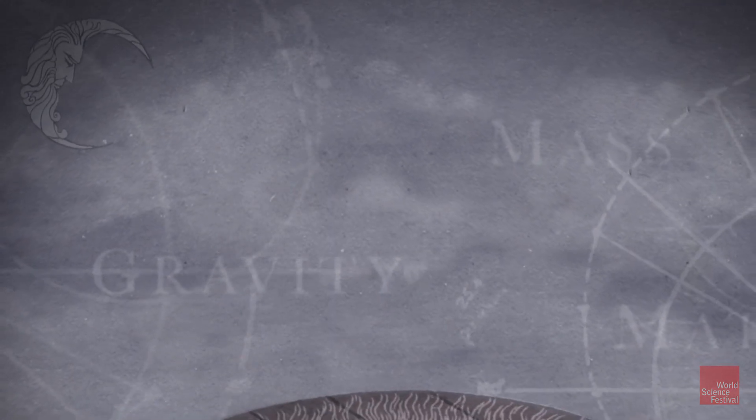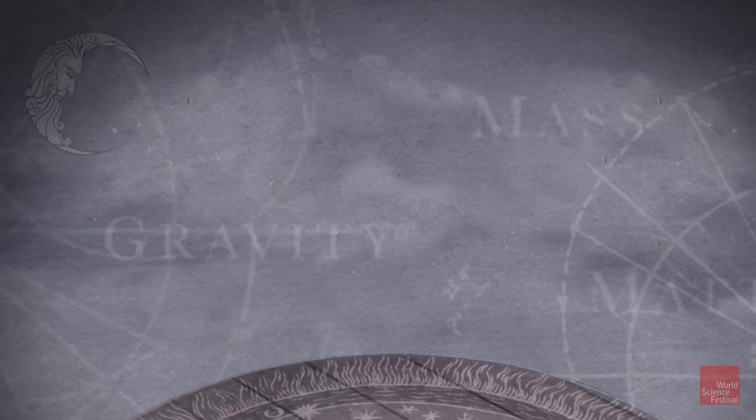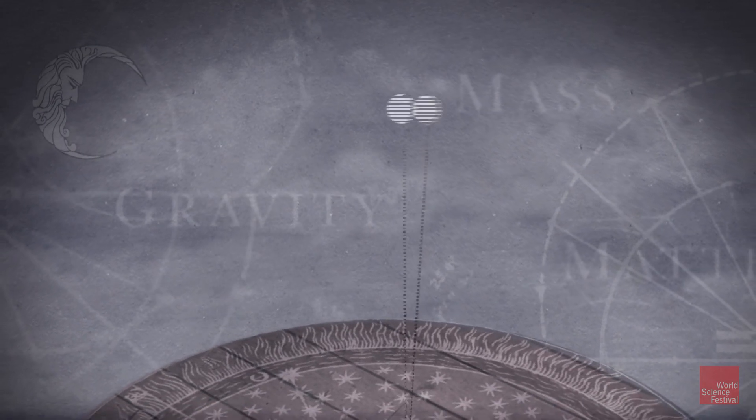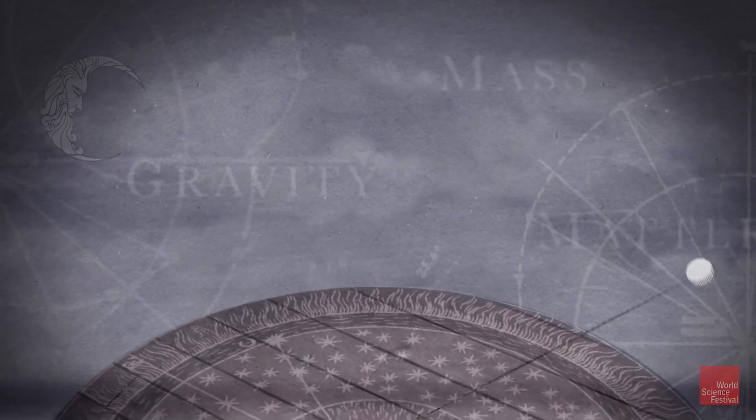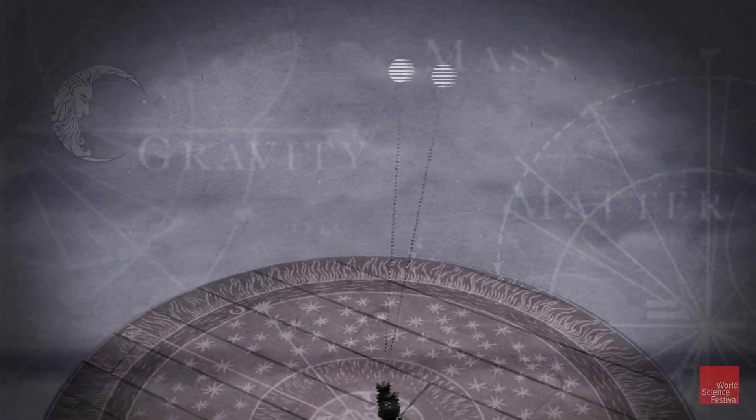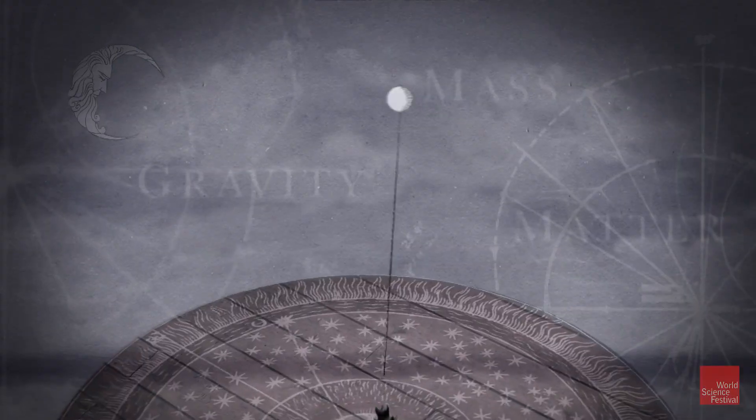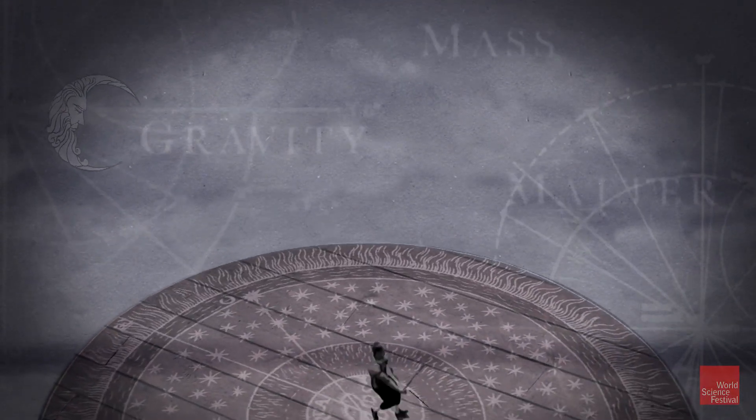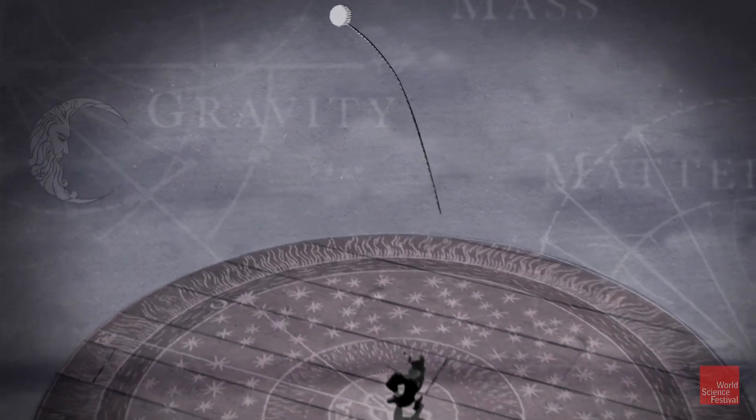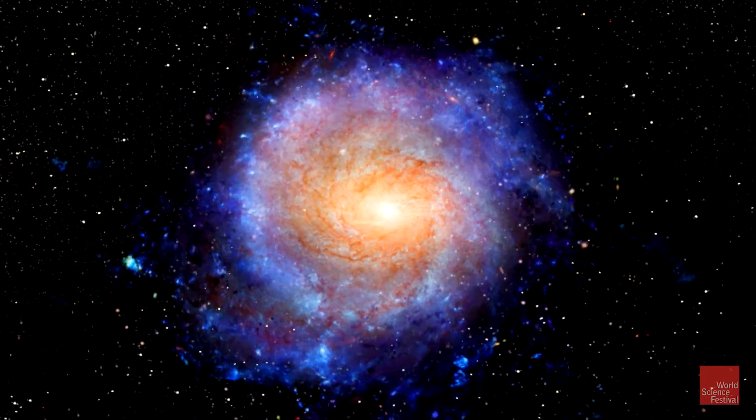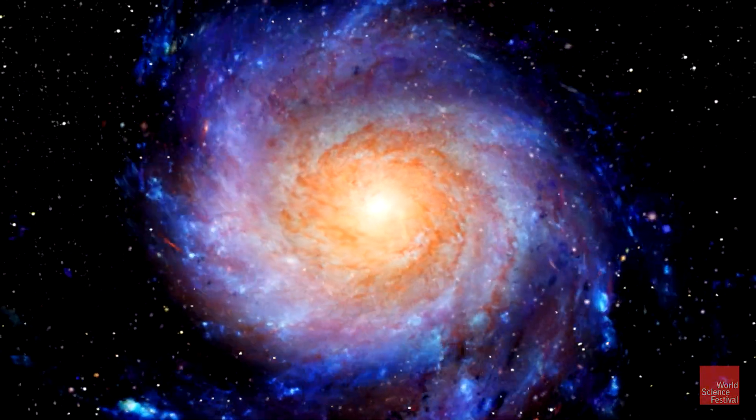But when things are spinning, there's a different calculation we can make about the relationship between two objects. Spin a heavy object around, the faster you spin it, the heavier it seems. Spin it fast enough, and the object pulls so hard its force overwhelms us. We lose control, and it flies away. And it is in this way that Vera's galaxies behaved strangely.